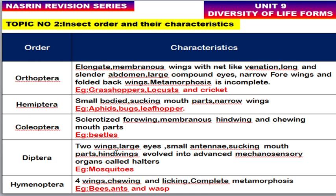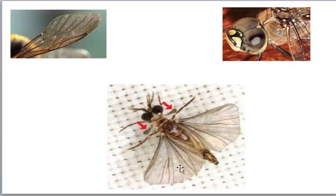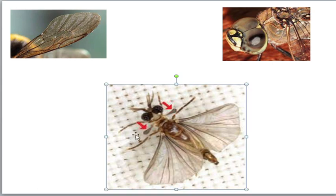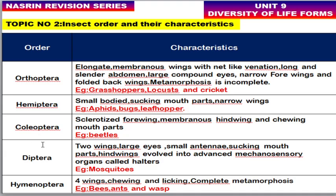Diptera includes mosquitoes. Insects in this order have two wings, large eyes, and very small antennae. The mouthparts are used for sucking, as mosquitoes suck blood. The hindwings have evolved into an advanced mechanosensory organ called halteres. Hymenoptera includes bees, ants, and wasps. They have a four-wing structure, mouthparts used for chewing and licking, and undergo complete metamorphosis.